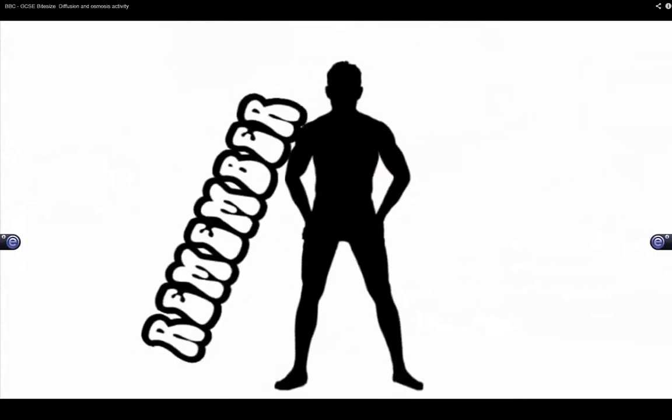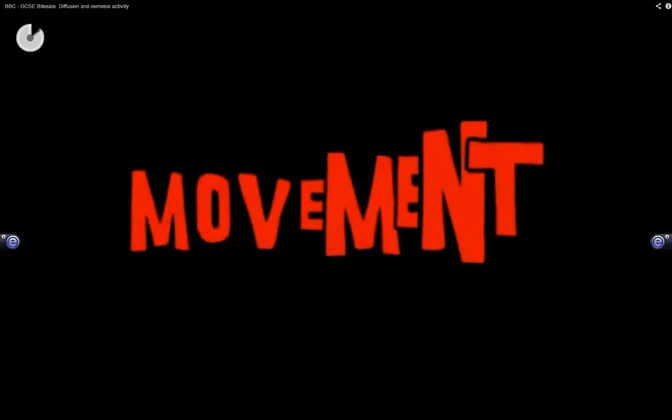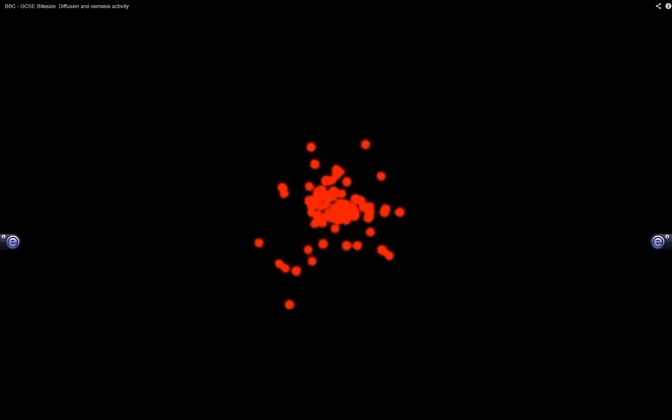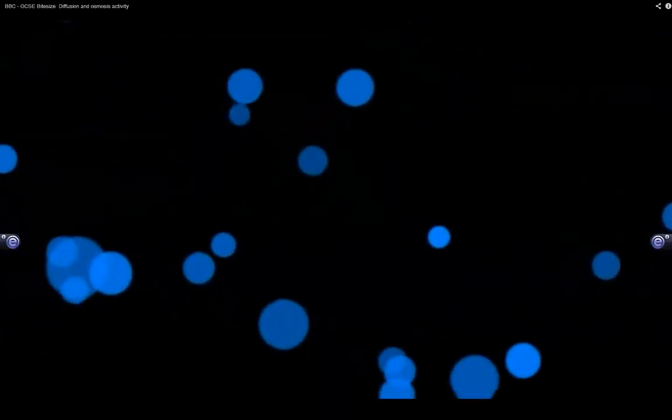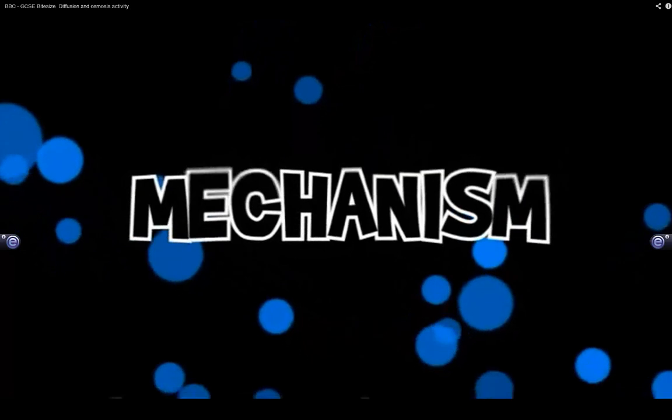The thing to remember is that diffusion is movement from high to low concentration. And the greater the concentration gradient, the faster this takes place. Okay, I think you've sussed that. Let's look at the other mechanism for moving stuff around.